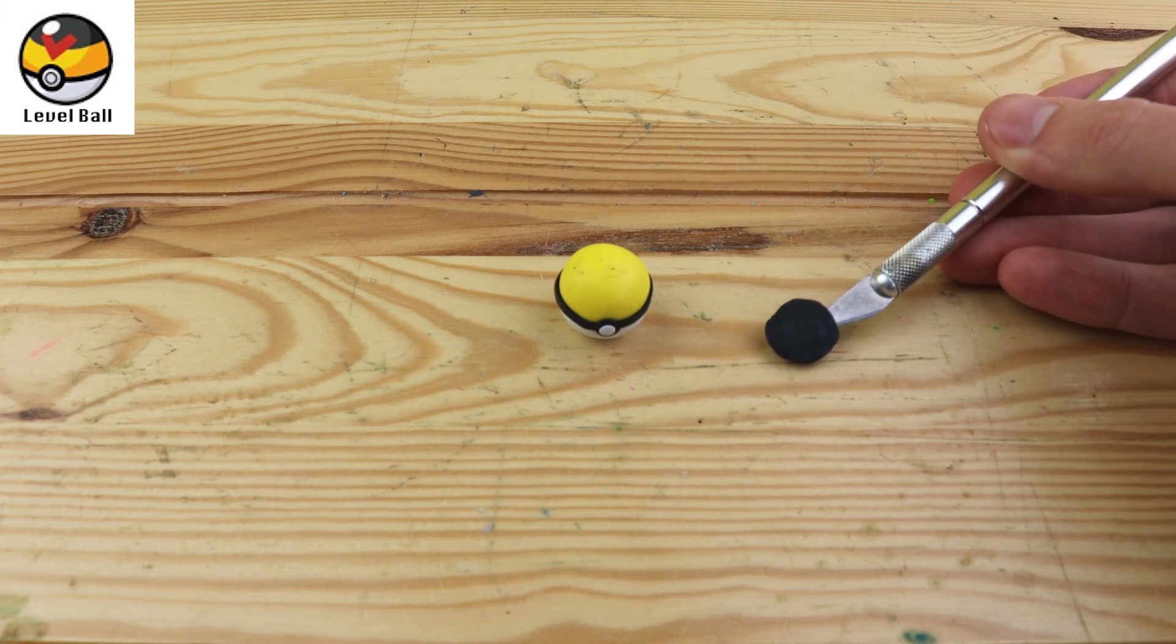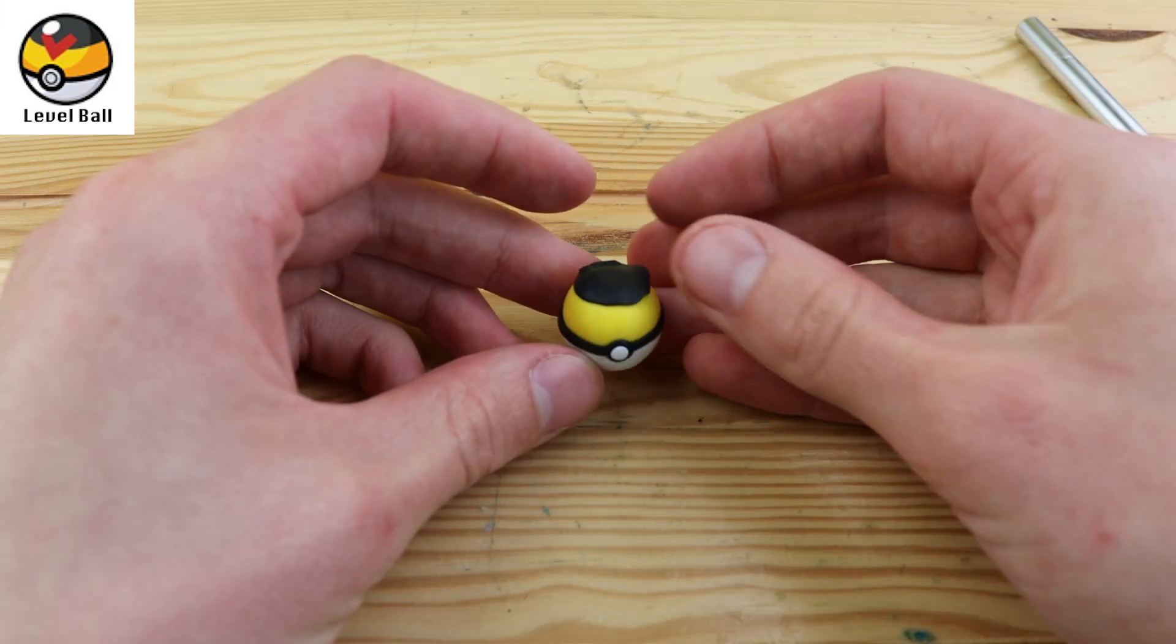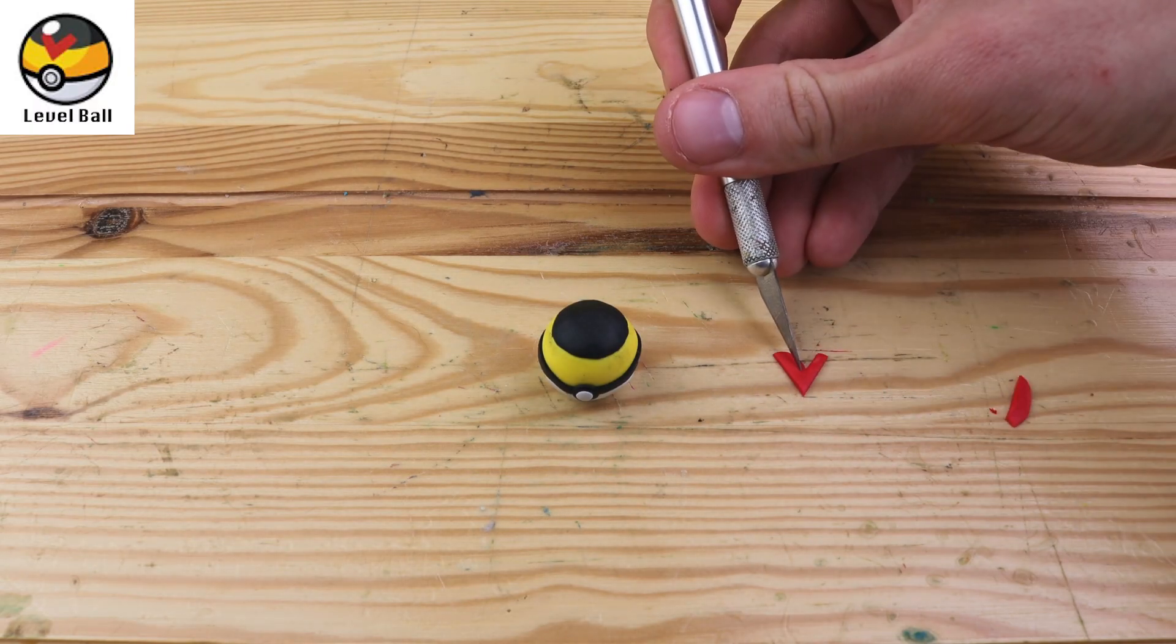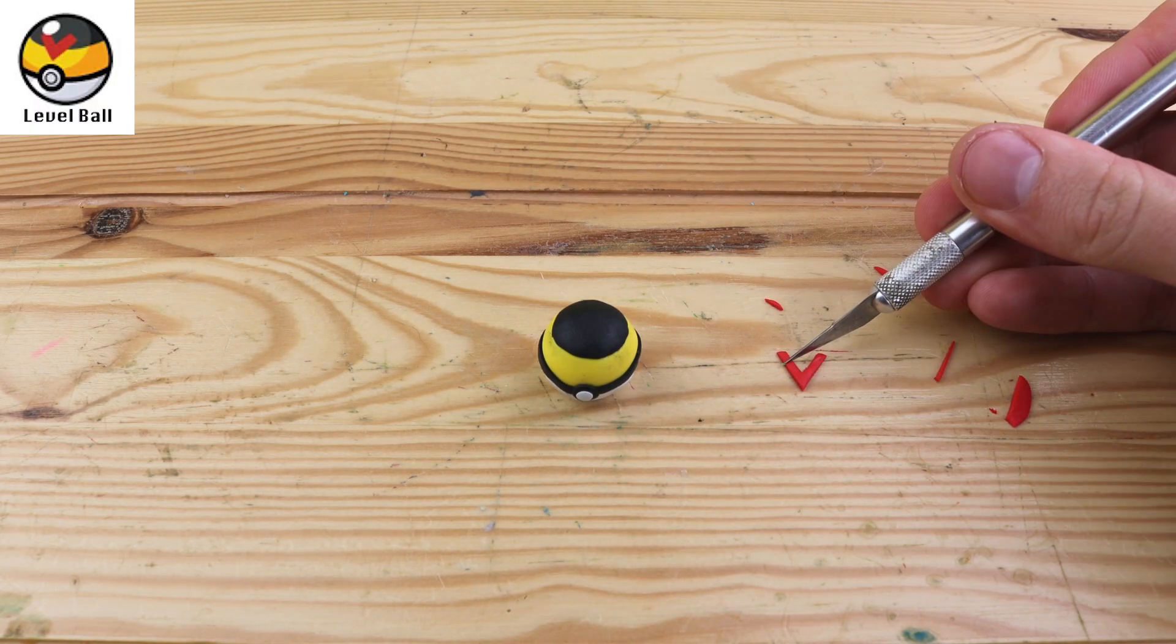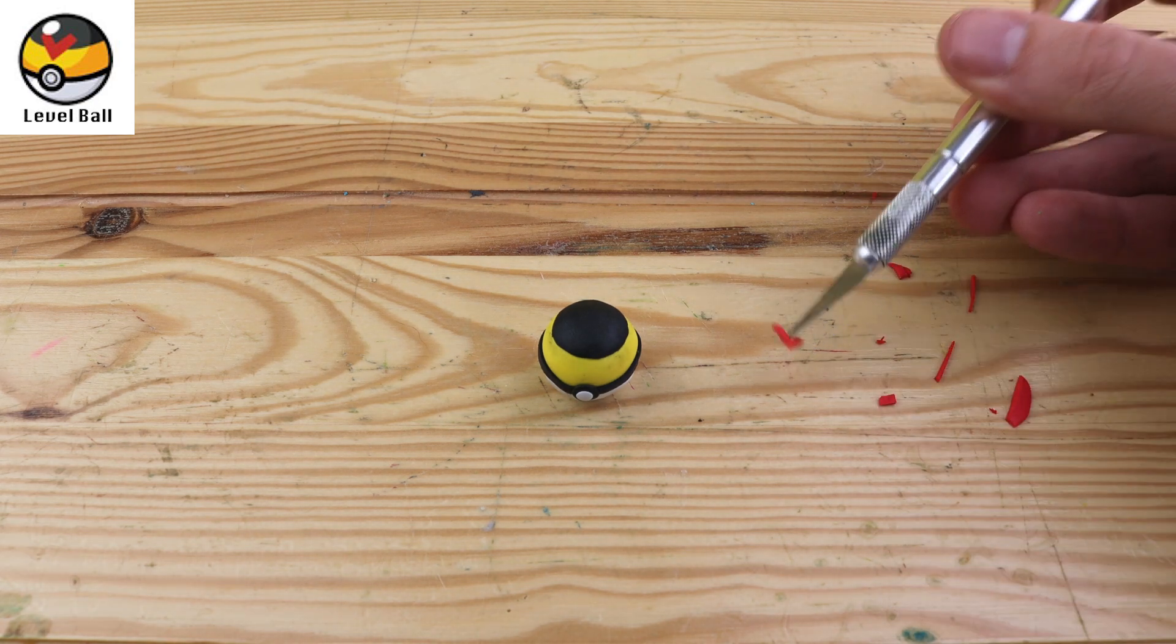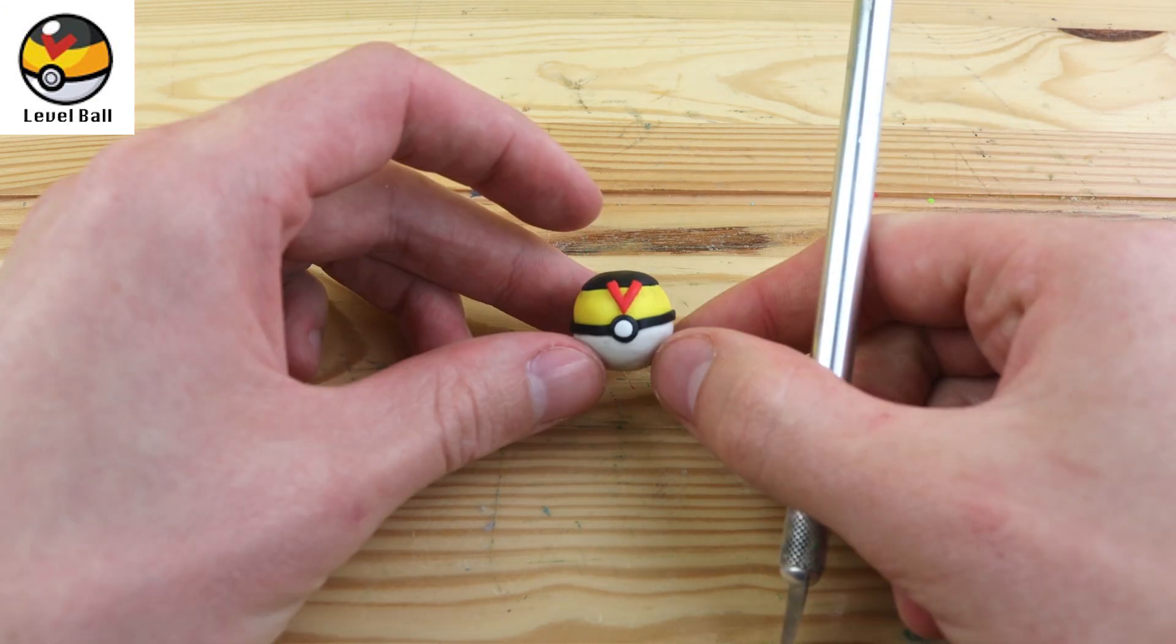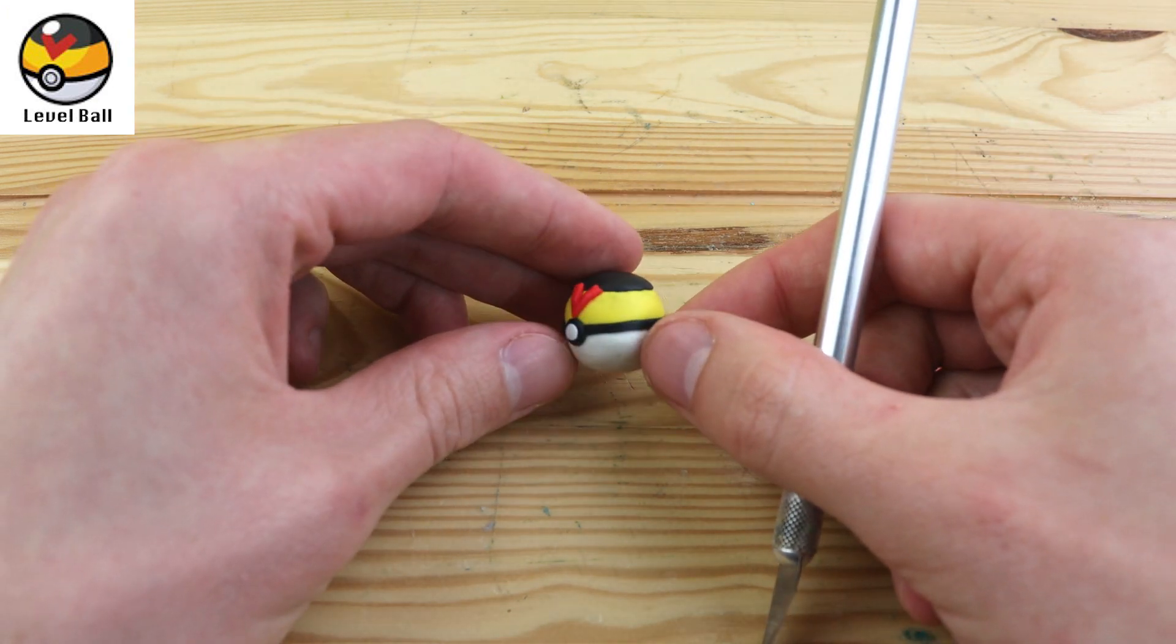The thing that makes the level ball very unique is that you're more likely to succeed at catching a Pokémon, the higher level your Pokémon is above the one that you're catching. Let's take this red V and stick it on the front of it, and let's move on to our next Pokéball.